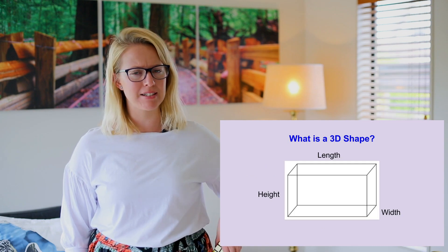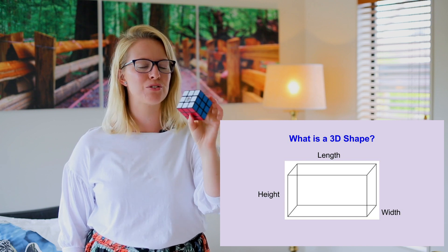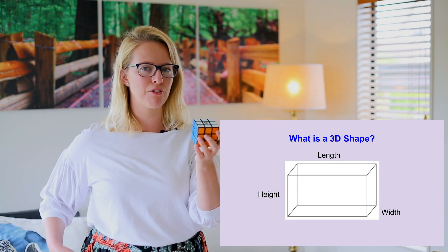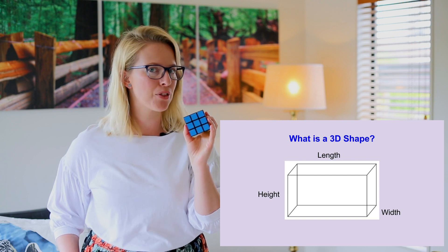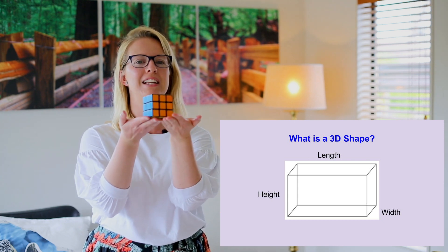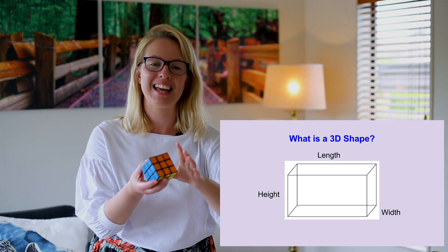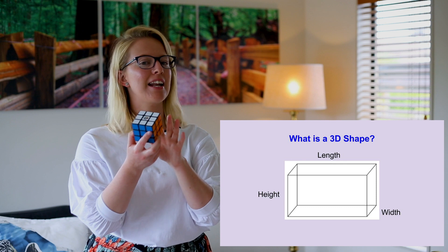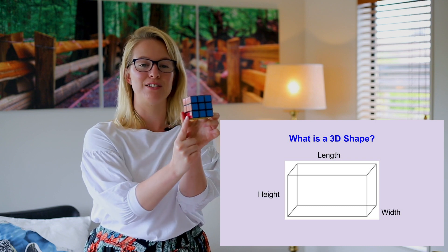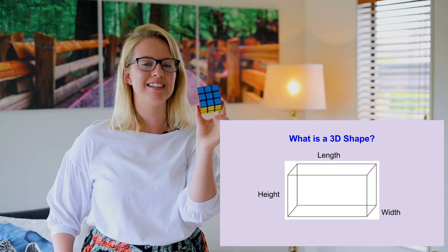Now I just so happen to have a very handy 3D object in my pocket. This is called a Rubik's Cube and I'm sure lots of you have seen these around. These Rubik's Cubes are a type of 3D shape. It's kind of given away in the name, but do you know what 3D shape this is? Yes, it is a cube, and we can tell it is a 3D shape because it has length, width, and height.